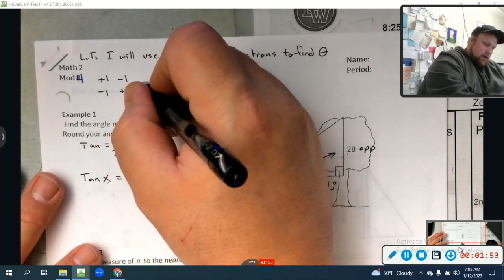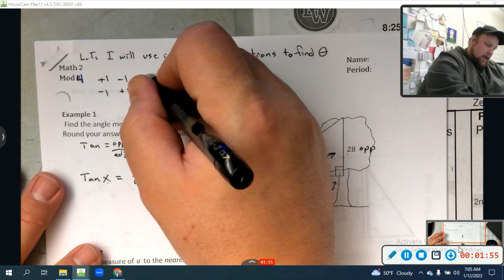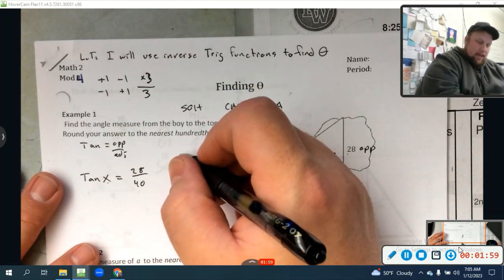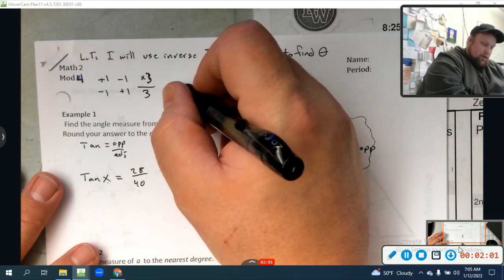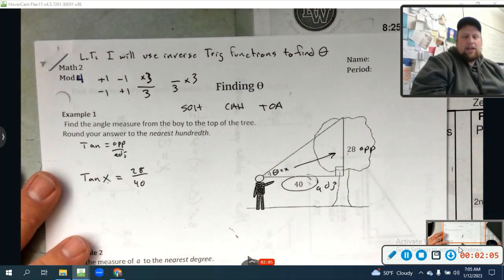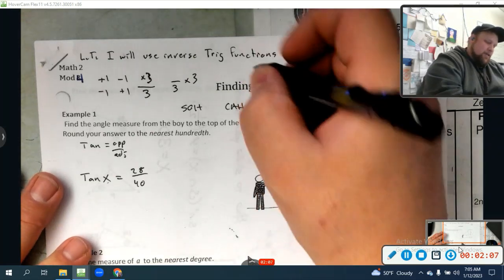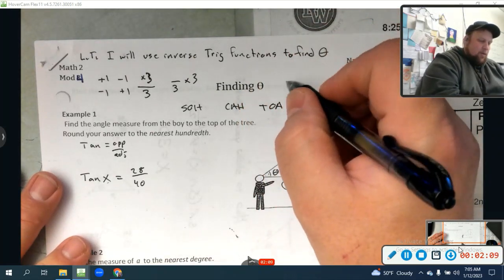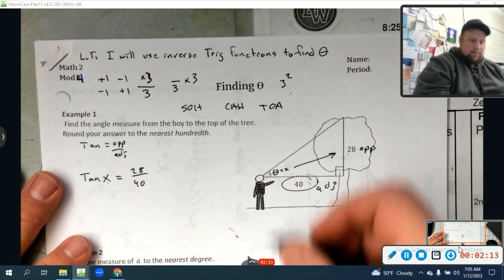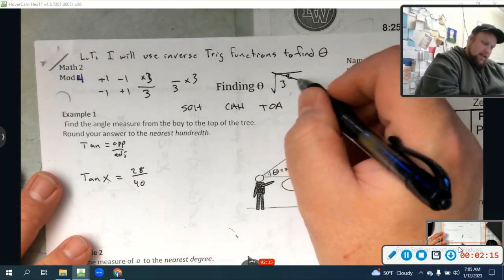How do we undo times 3? Divide by 3. How do we undo divided by 3? Times 3. See how we just do the opposite every time? Or how about this? What if I want to undo 3 squared? I take the square root. That cancels it out. Remember that?